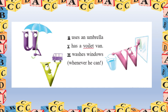U uses an umbrella. V has a violet van. W washes windows whenever he can. Repeat after me — U uses an umbrella, V has a violet van, W washes windows whenever he can. Good! Now let's repeat the whole thing together — U uses an umbrella, V has a violet van, W washes windows whenever he can.